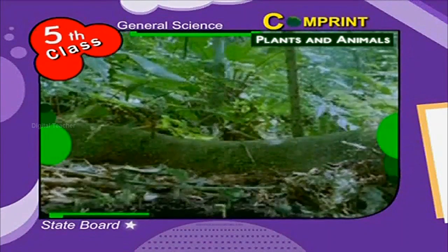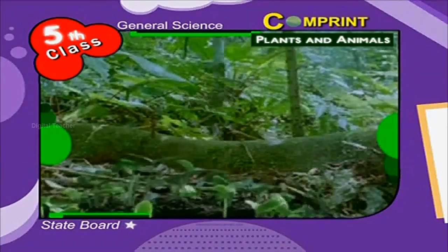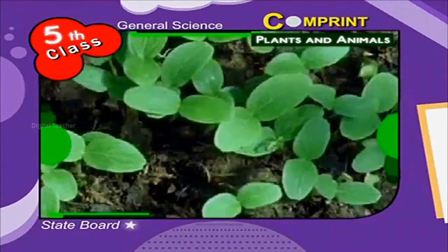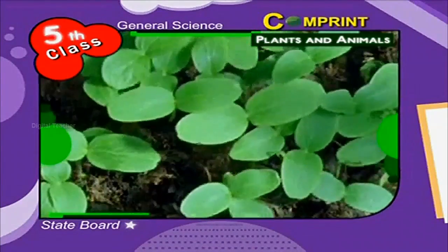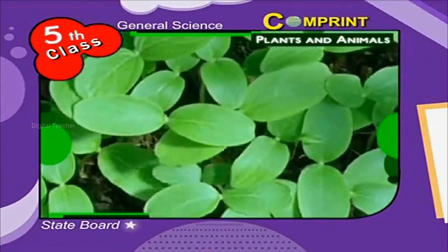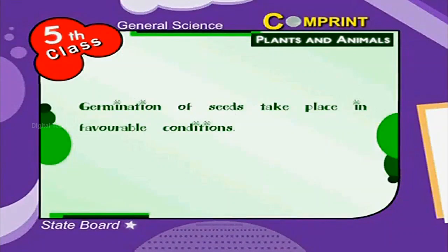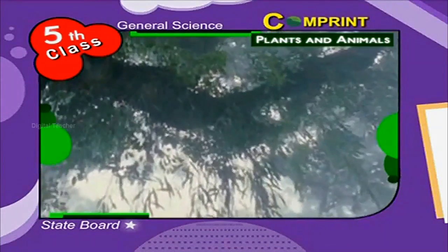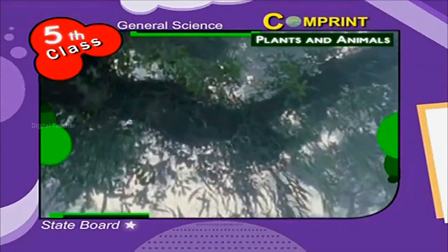Growing of a new plant from a seed is called germination. Germination of seeds takes place in favorable conditions. These grow into a plant and then a tree.